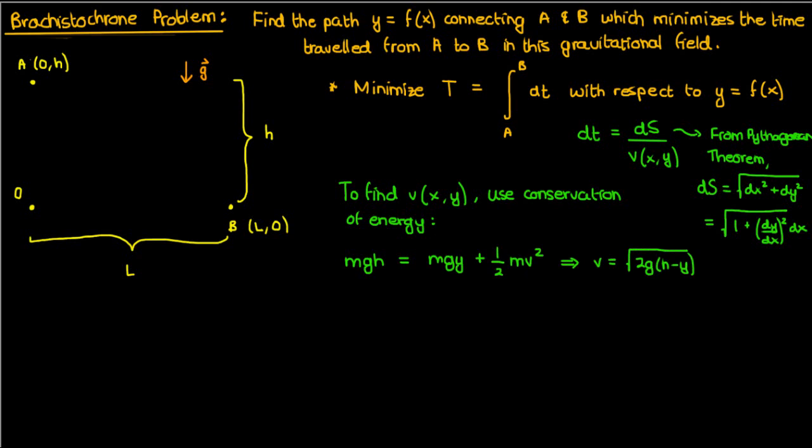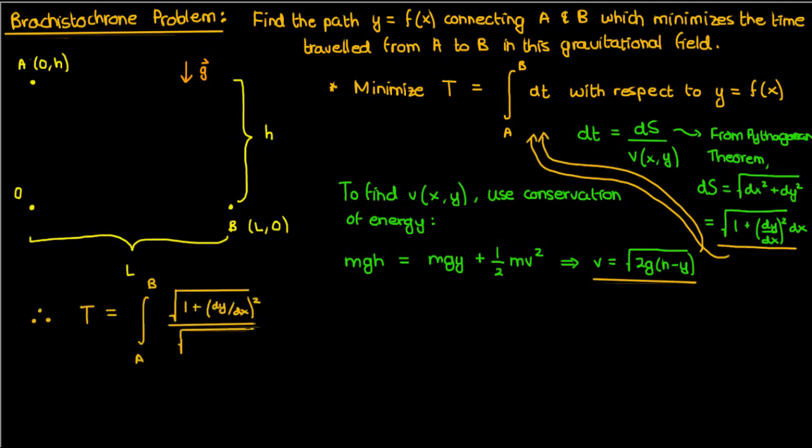We're going to take this expression for ds and this expression for v and plug them into our time integral, our functional. Once we do that, here's what we'll end up with. Again, the purpose of the brachistochrone problem is to find the function y of x such that this functional T is minimized. And in order to minimize T, we first need to determine the function y of x which makes T stationary. But how do we do that? How do we make T stationary? That's right, we solve the Euler-Lagrange equation, which we derived in the previous video.